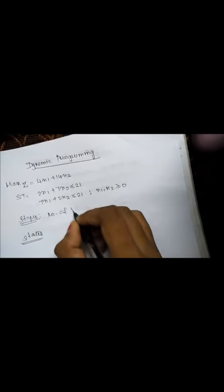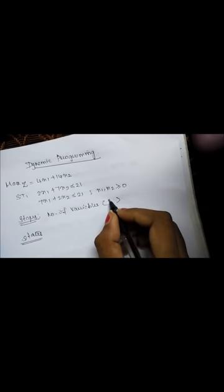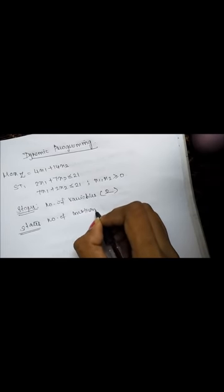To solve the problem we have to consider two main things called stages and states. Stages are nothing but the number of variables used in the problem. Here we are using x1 and x2, so we are representing stages as 2. States are nothing but the number of constraints; we have only two constraints, so we are representing states as 2.